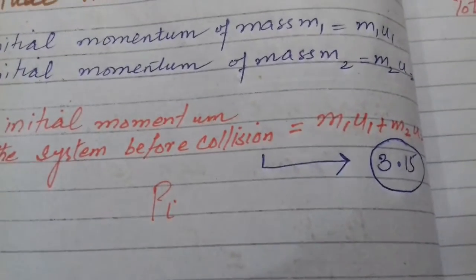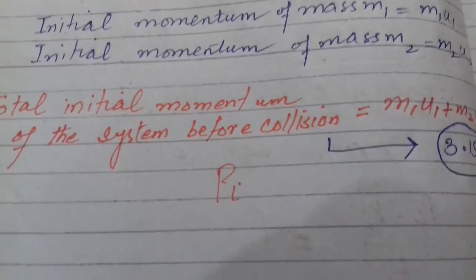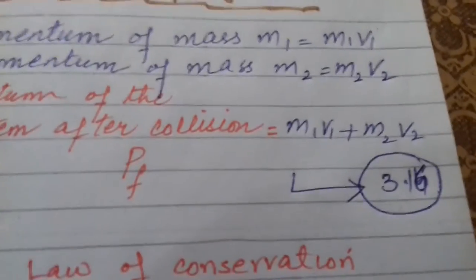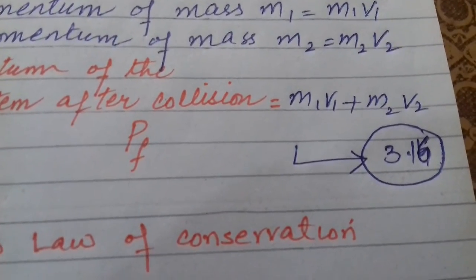Now equation number 3.15 is the initial momentum of the system before collision. And equation 3.16 is the final momentum of the system after collision.